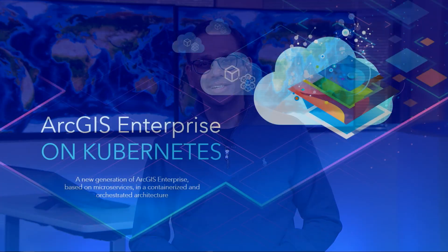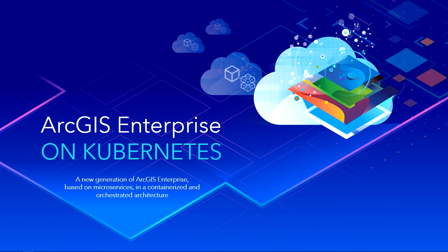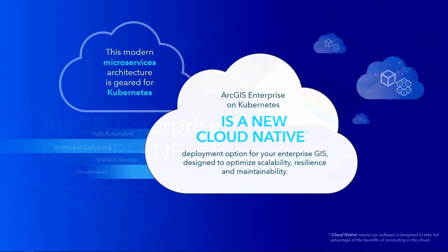We're now going to showcase a new product for the very first time. We're super excited because we've been working on it for a few years now. Introducing RTS Enterprise on Kubernetes. It's an architecture that's based on microservices, it's containerized, and it runs in an orchestration fabric. It's a new cloud-native deployment for your enterprise GIS.